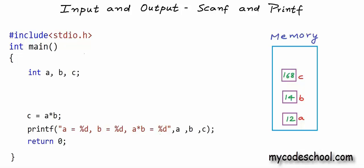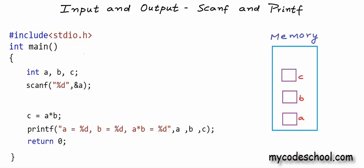stdio.h is already included here. This function is named scanf. There are two arguments to scanf: the first argument, just like printf, is a string constant carrying a format. The second argument is the variable 'a' preceded by an ampersand sign. I'll talk about why I'm putting an ampersand before 'a' in a moment. I'll then write one more scanf statement, and this time the second argument is ampersand b.